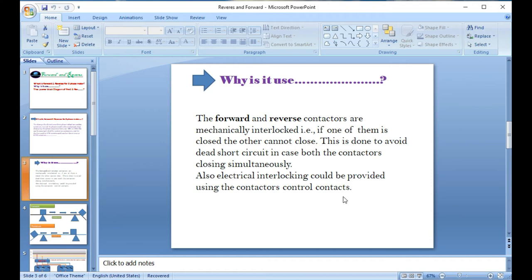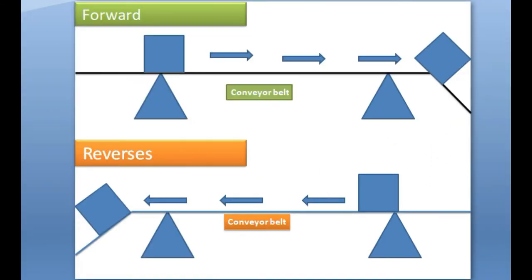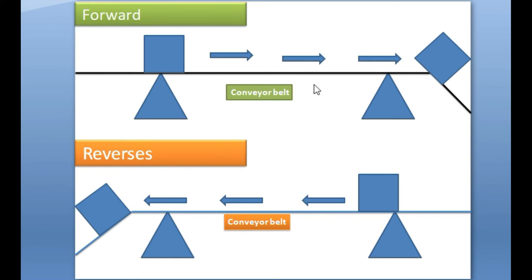Now let's look at what forward and reverse means visually. When a motor is running forward, it is rotating clockwise — like a box or conveyor moving in front of you, going forward. This clockwise rotation is the forward system. The reverse is the opposite rotation — counterclockwise. These two types of rotation are the basic concept of forward and reverse for any kind of conveyor belt or motor system.